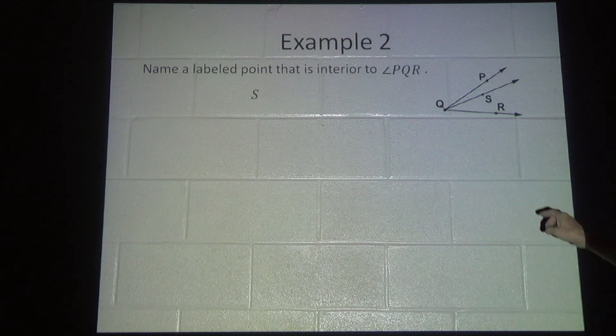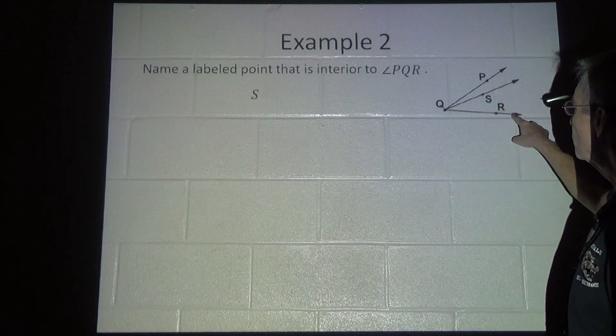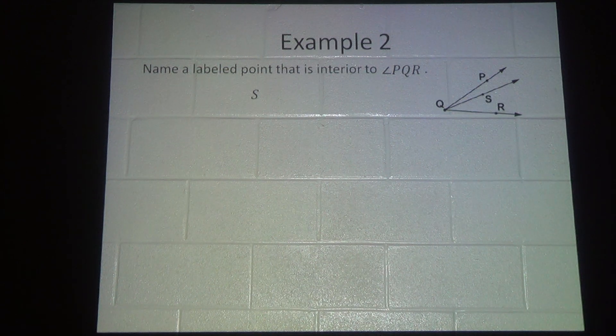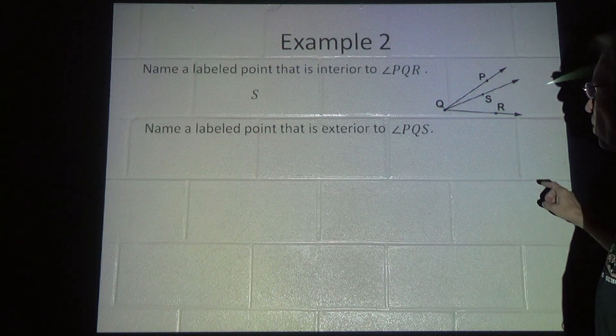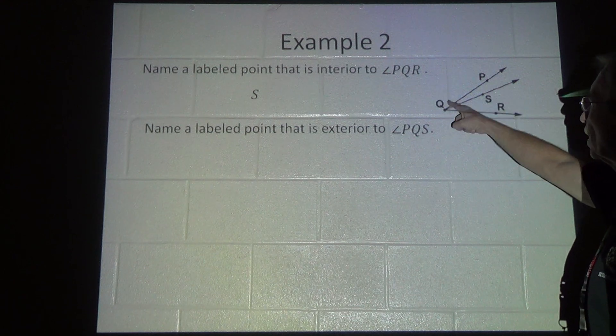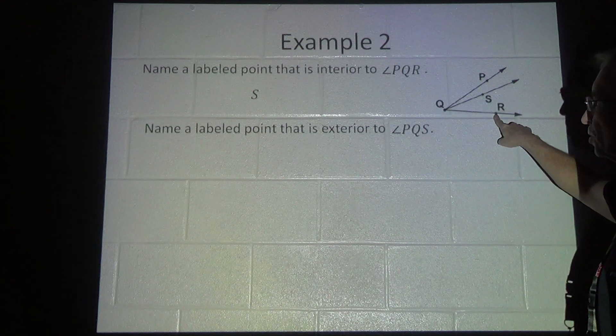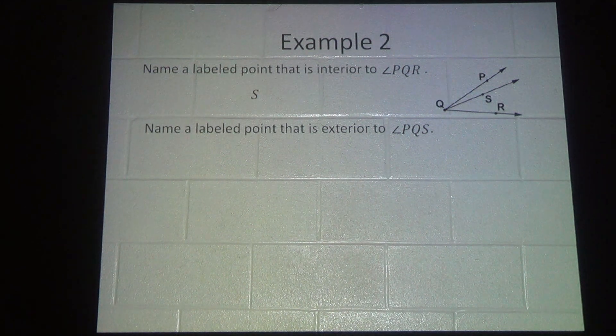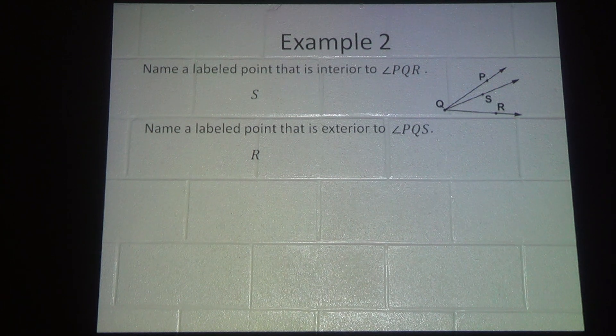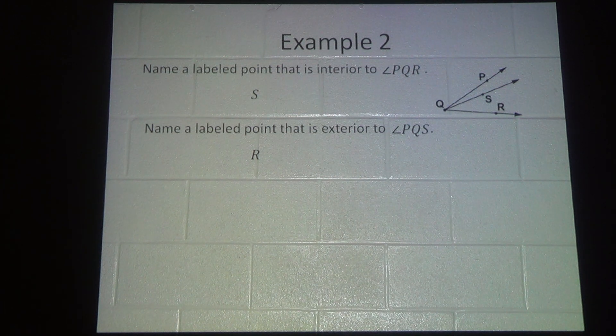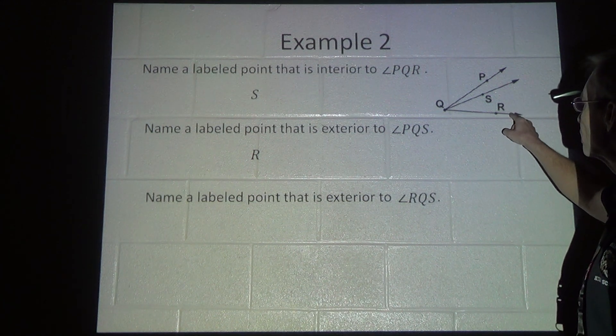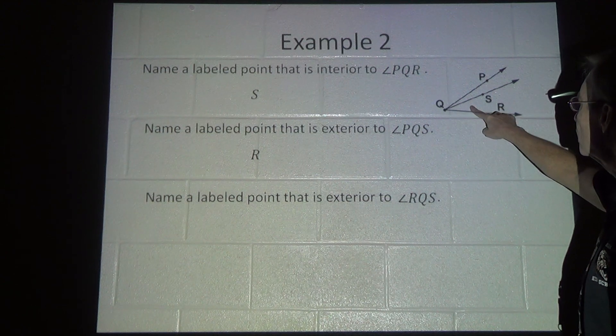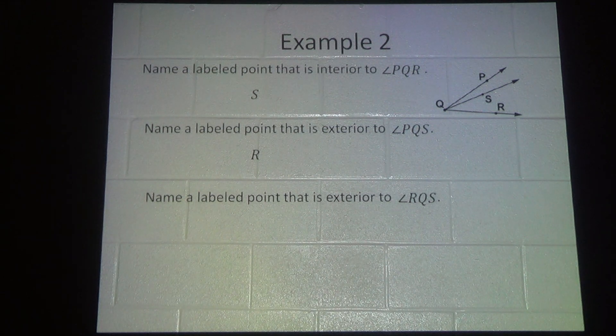Example two. They want us to name a labeled point that is on the interior to angle PQR, which is the big angle. Point S is the answer. They want us to name a labeled point that is exterior to angle PQS, which would be at point R. They want us to name a labeled point that is exterior to angle RQS, which is this angle right here. Point P is the one that's not interior to it or on it.